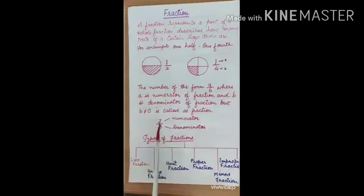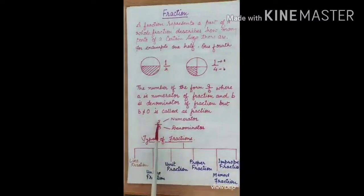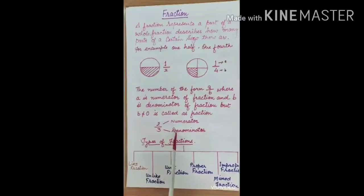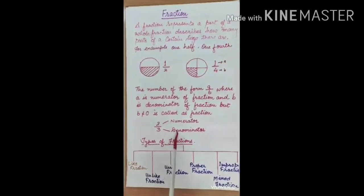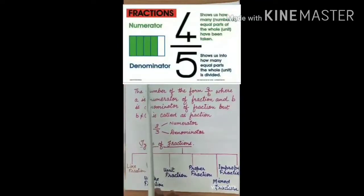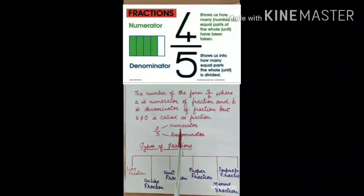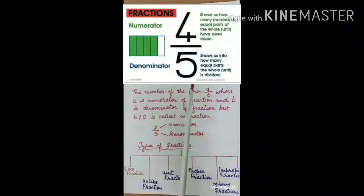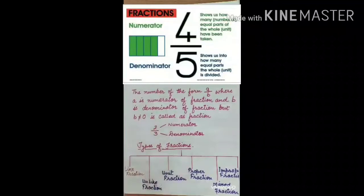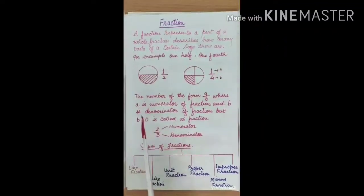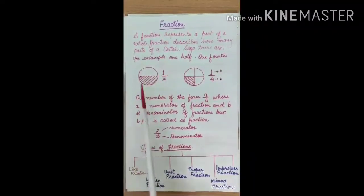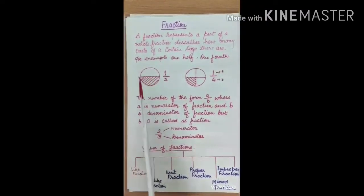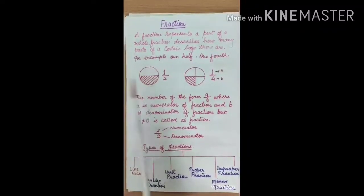For example, in the fraction 2 upon 3, 2 is the numerator and 3 is the denominator. The numerator is the top part of a fraction and the denominator is the bottom part. The numerator represents how many parts of the whole are being considered, while the denominator represents the total number of parts created from the whole. In simple words, the numerator represents the shaded portion in a figure, whereas the denominator represents the total number of parts of the figure.